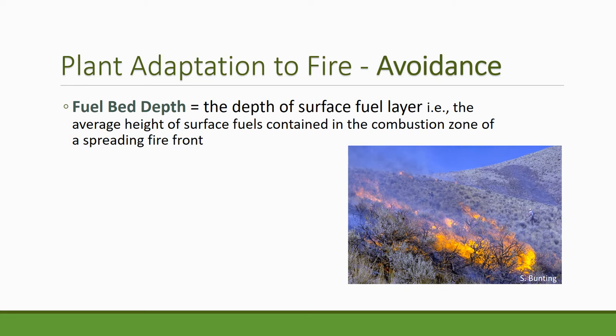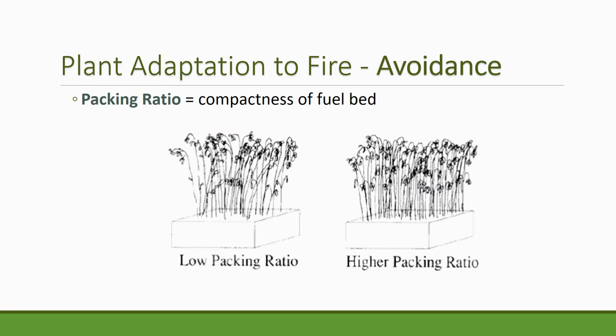The fuel bed or depth of fuel bed is the depth of the surface fuel layer — the average height of fuel within the combustible zone. It affects the fire front and how quickly fire spreads through the system. Packing ratio is the compactness of the fuel bed. Looking at a diagram of annual grasses: on the left is a low packing ratio, on the right a high packing ratio, with the only difference being the number of stems per area. That compactness affects both the heat and the rate of spread of the fire.